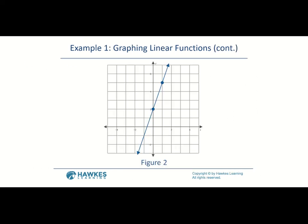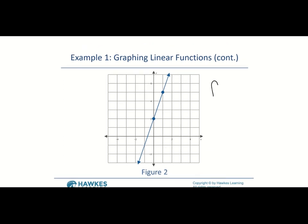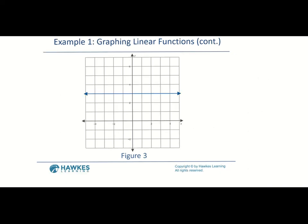Looking at the graph of f(x) = 3x + 2, we can see the ordered pairs (0, 2) and (1, 5) plotted, and (−2/3, 0) is also shown. It passes the vertical line test, confirming it's a function. For g(x) = 3, the graph is a horizontal line through (0, 3), (1, 3), and (2, 3). Remember, horizontal lines have a slope of zero.